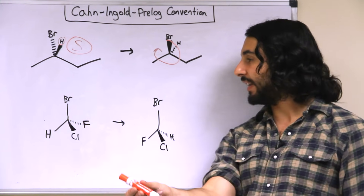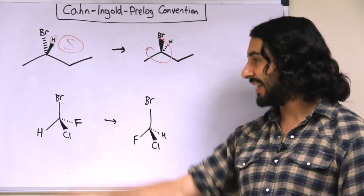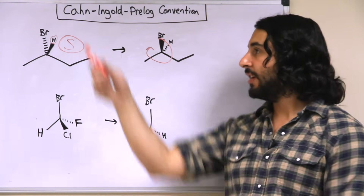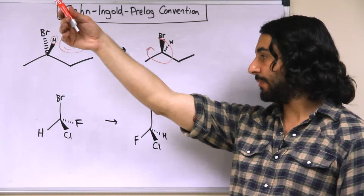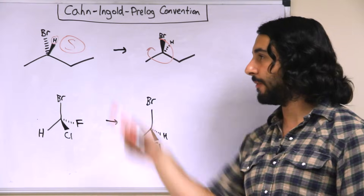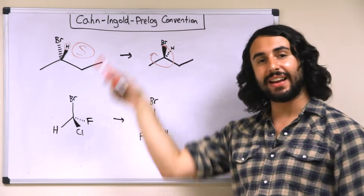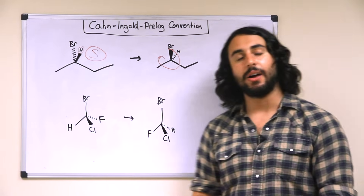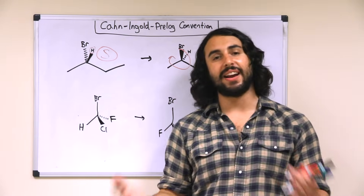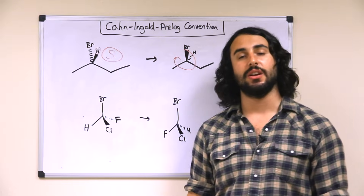From that perspective I can see that bromine is up here, chlorine is down to my left — because this wedge bond projects the chlorine out this way — and then fluorine is down to the right. So I'm seeing bromine, chlorine, fluorine: from my perspective that looks like S.